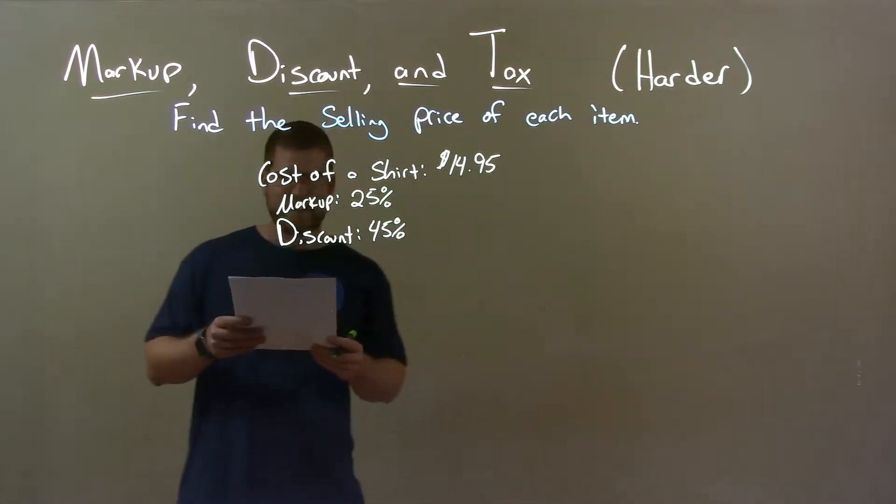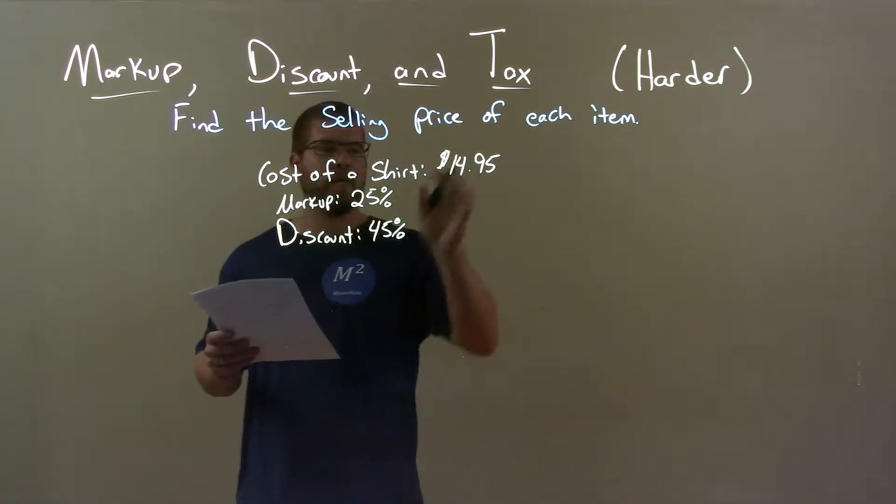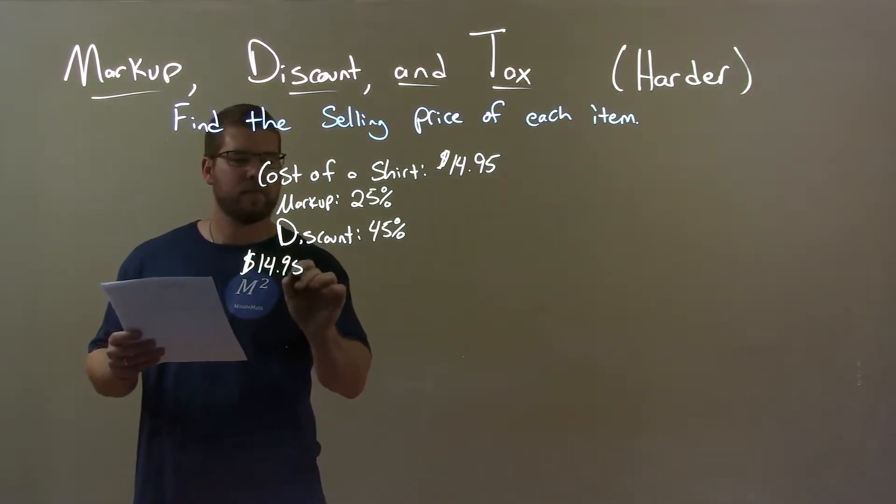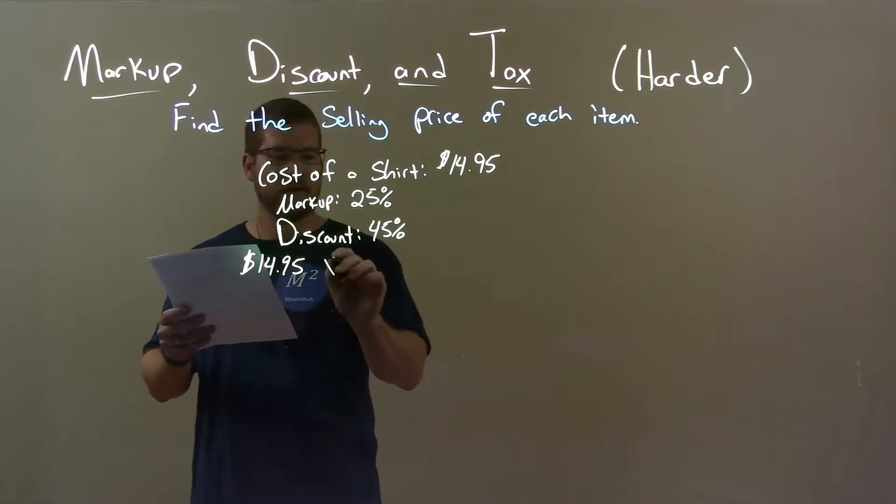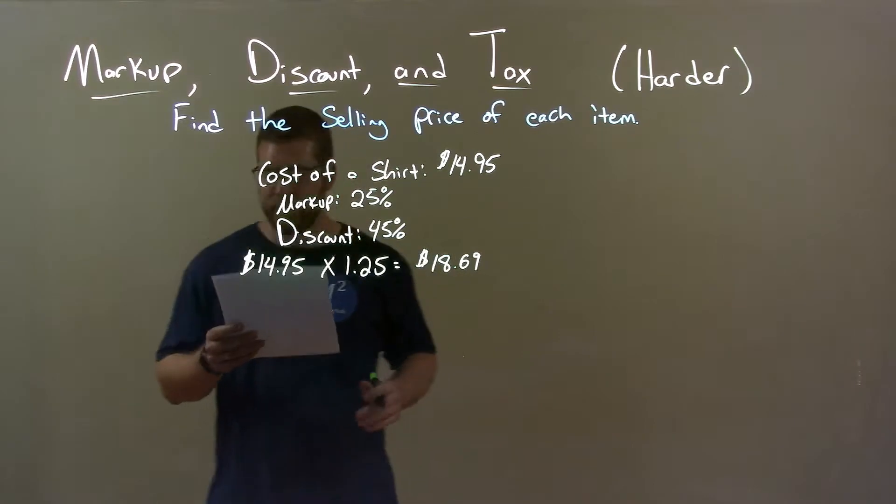So, we have a markup, then a discount. First we'll start dealing with that markup. The cost of this shirt is $14.95, and we're going to multiply that by 1.25. That represents a markup of 25%, and we have $18.69 here.